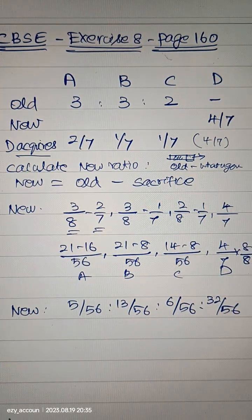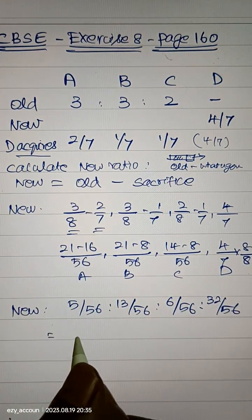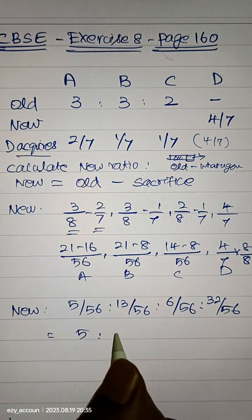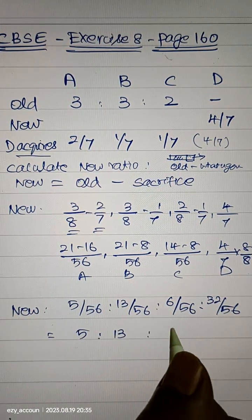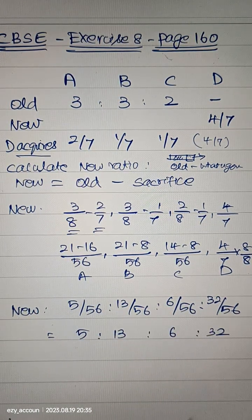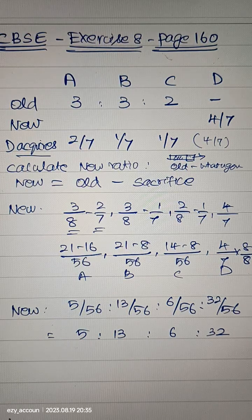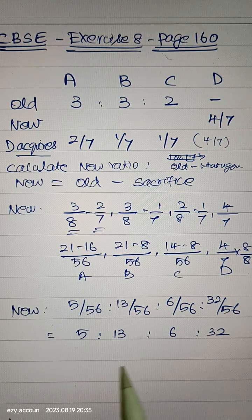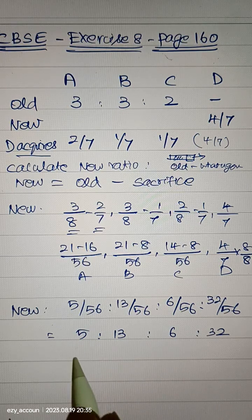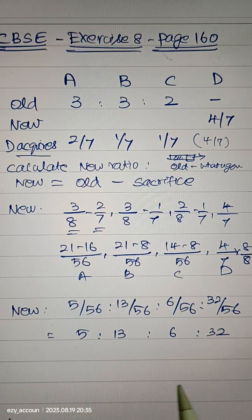So that is equal to 5 is to 13 is to 6 is to 32. It's a very unique and strange ratio. But how do you know, how do we know that the ratio is right? We have to add everything and we have to see whether we get 56.